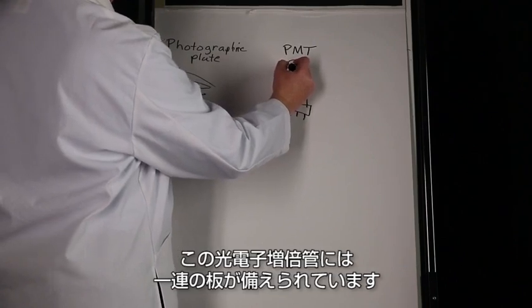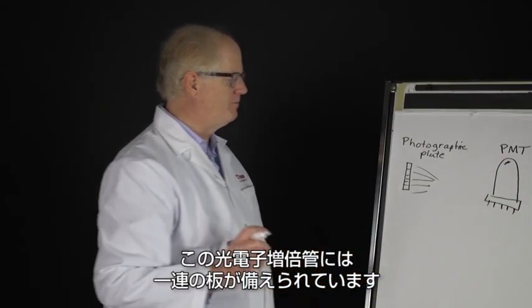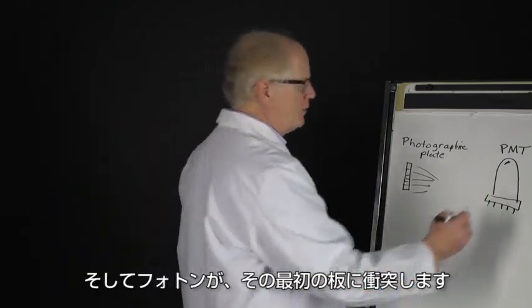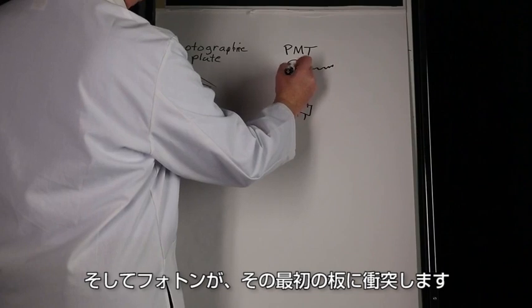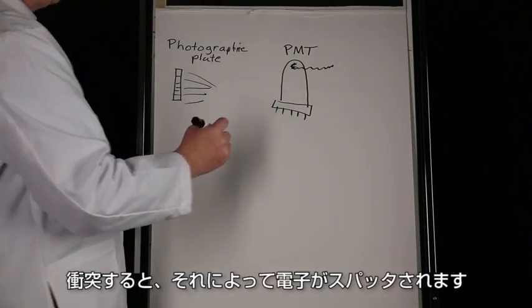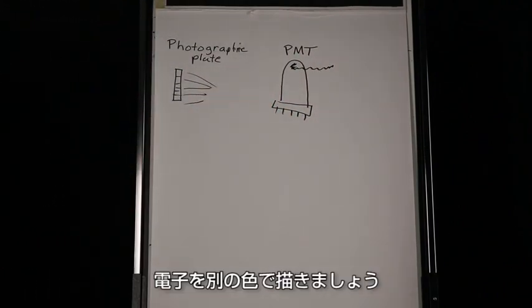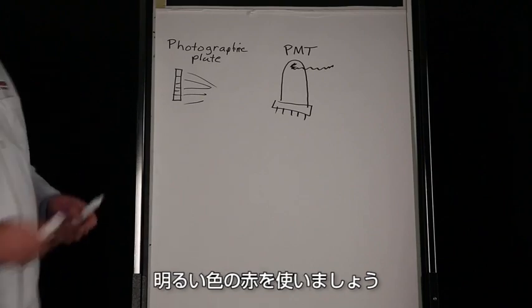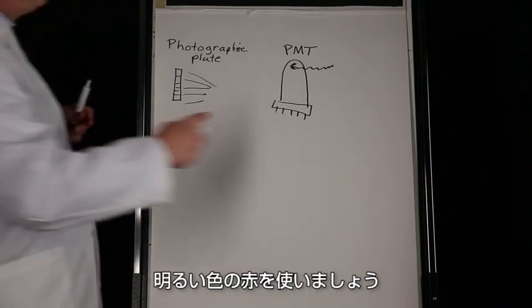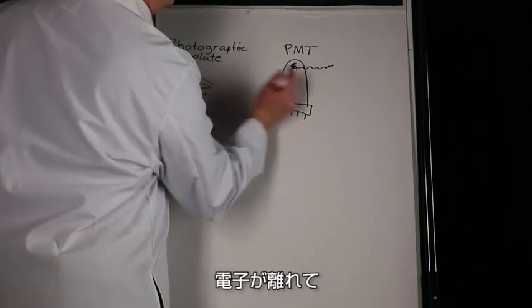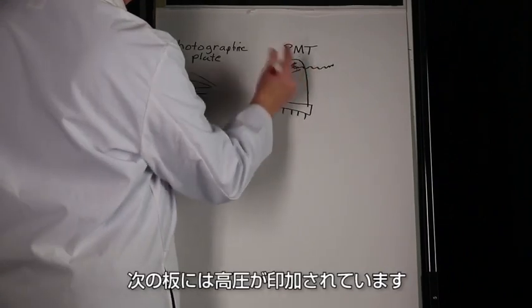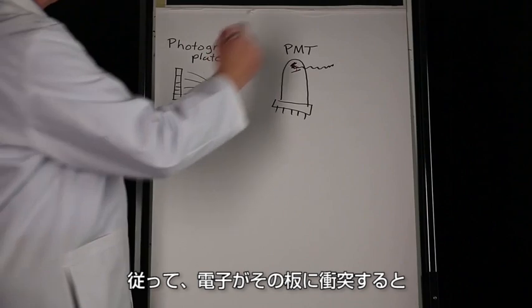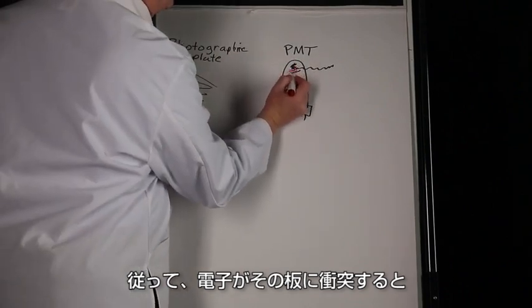That photo multiplier tube has in it a series of plates, and the photon would come in and strike that first plate. When it did, it would cause an electron to sputter. The electron would come off and move down and hit the next plate. That next plate was at a higher voltage, so when that electron struck that plate, I would end up with a bunch of electrons coming off.